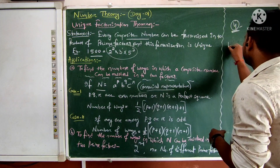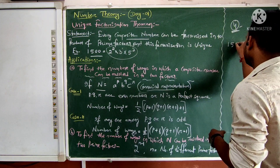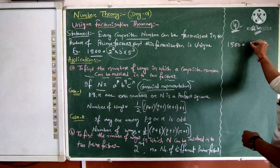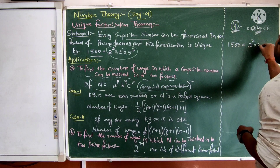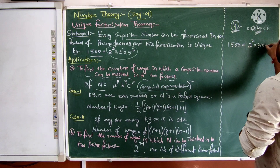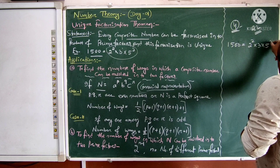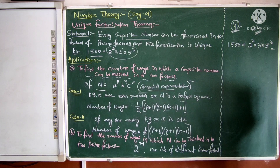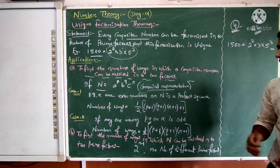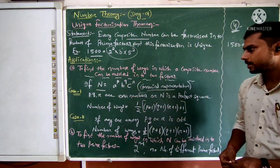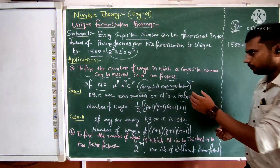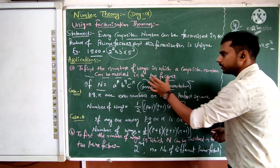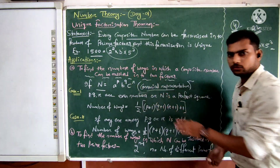So if we proceed with 1500, we have 2² × 3¹ × 5³. Now we aim to find the number of ways this composite number can be resolved into two factors. We consider two cases based on whether the exponents p, q, and r are all even or not.